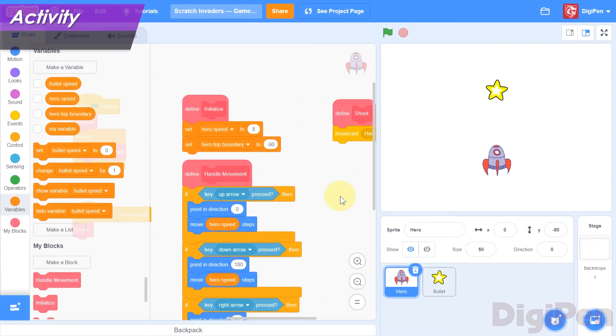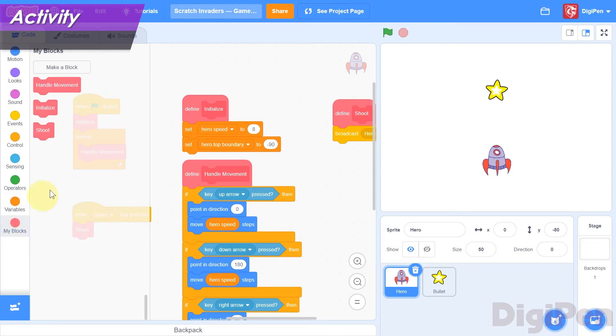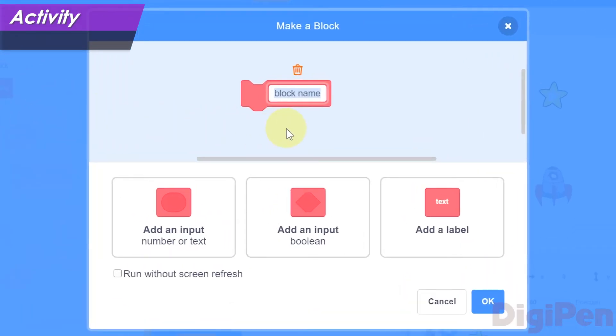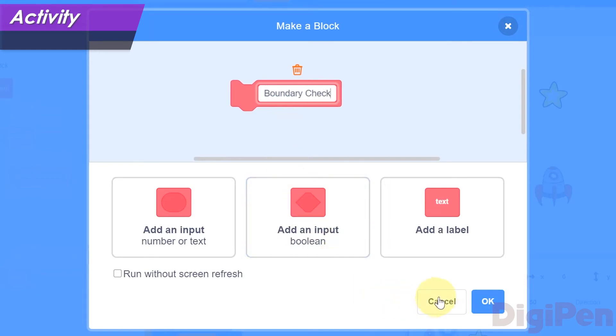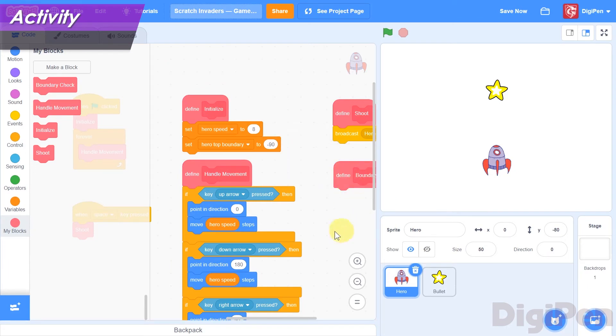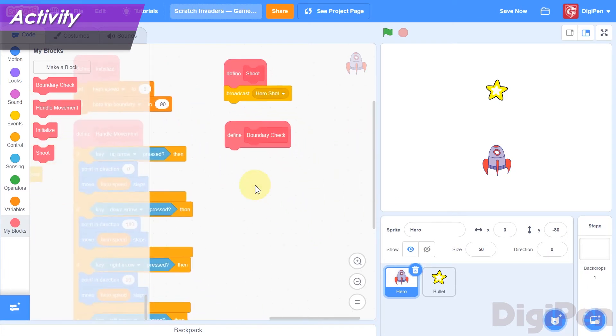Now we can move on to writing the boundary checking code. This code is easy to package neatly in a function. Click the pink My Blocks category on the left, and then click the Make a Block button. Name the new function Boundary Check. Let's consider again what we're going to do. If the hero's Y position is too high, then we modify it. If Then. We'll use an If Then block.